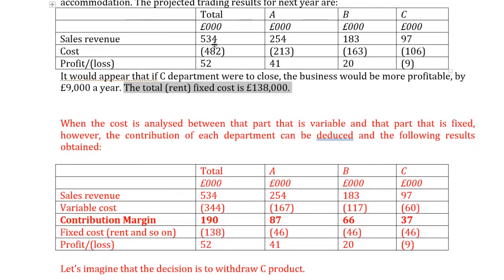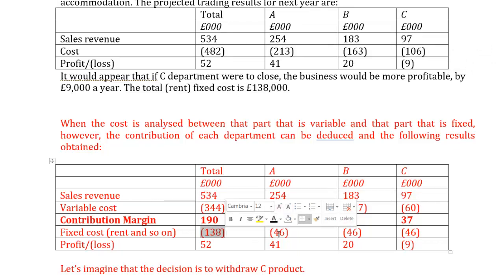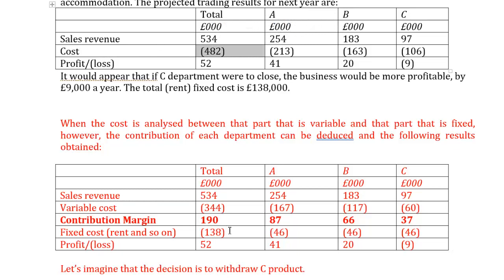To decide, calculate the contribution margin for each product. The variable cost = total cost £482 − fixed cost £138 = £344. Contribution margin = sales revenue £534 − variable cost £344 = £190 in total. For product C specifically: its contribution margin is positive at £37. This is the key figure — the total profit remains £52, and product C is contributing £37 toward fixed cost coverage.